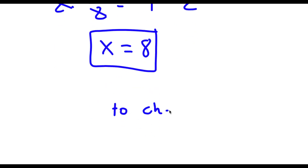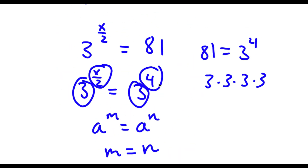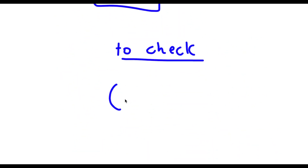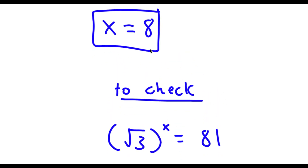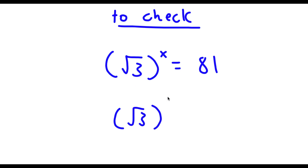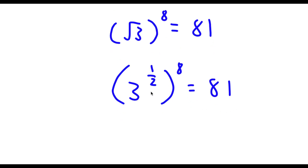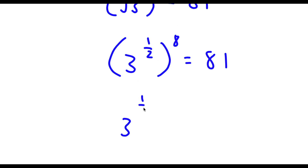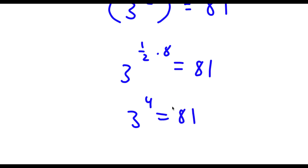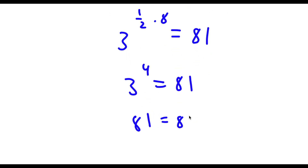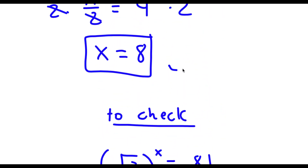So now to check: I have the square root of 3 to the power of x is equal to 81, and we know that x is equal to 8. So now I have the square root of 3 to the power of 8 is equal to 81. Now remember, the square root of 3 is the same thing as 3 to the power of 1/2. So I have 3 to the power of 1/2 to the power of 8, which is the same thing as 3 to the power of 1/2 times 8 — 8 times 1/2 is 4 — so I have 3 to the power of 4 is equal to 81, and 3 to the power of 4 is 81. So 81 equals 81, and my solution is right.